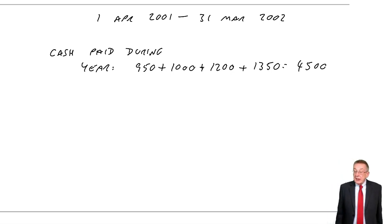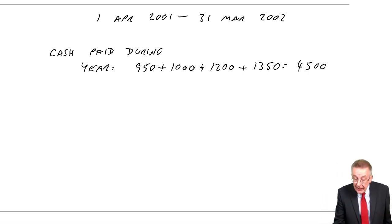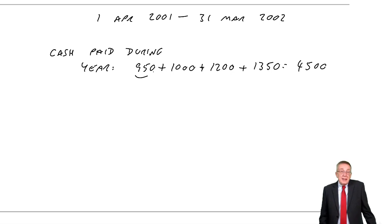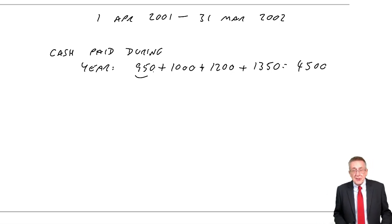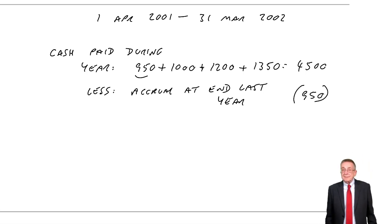Why is that not the expense for the year? Well, for two reasons. First of all, at the end of last year, we were owing money. And so part of what we've paid this year was, in fact, what was owing from last year. That first £950, remember? We paid it this year, but it's not a cost for this year, it was last year's cost. And so we need to subtract what was owing at the start of the year, the accrual at the end of last year. £950, remove it.